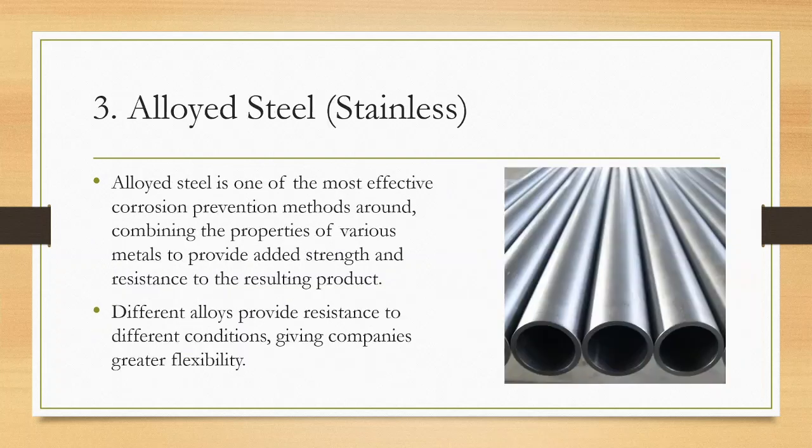Alloyed steels or stainless: Alloyed steel is one of the most effective corrosion prevention methods around, combining the properties of various metals to provide added strength and resistance to the resulting product. Corrosion-resistant metals like nickel, for example, combined with oxidation-resistant chromium results in an alloy that can be used in oxidized and reduced chemical environments. Different alloys provide resistance to different conditions, giving companies greater flexibility.